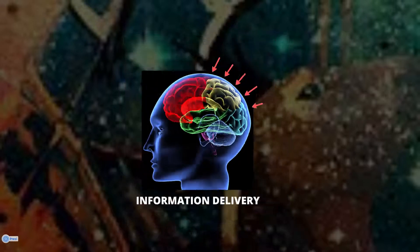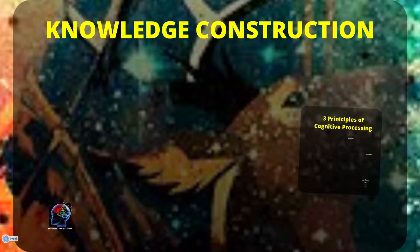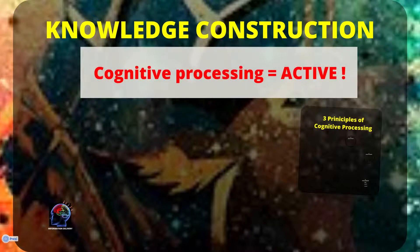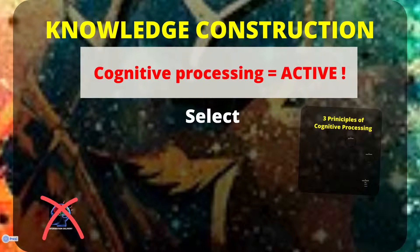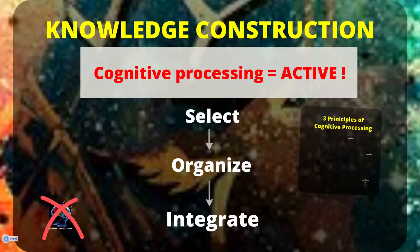We're using a different model here called the knowledge construction model. The underlying assumption is that cognitive processing is active as opposed to passive. What you're doing in creating new knowledge is selecting certain ideas, thoughts, and images, organizing them into a logical structure in your active or working memory. These are then integrated with your prior knowledge to create new knowledge. So this is an active process.